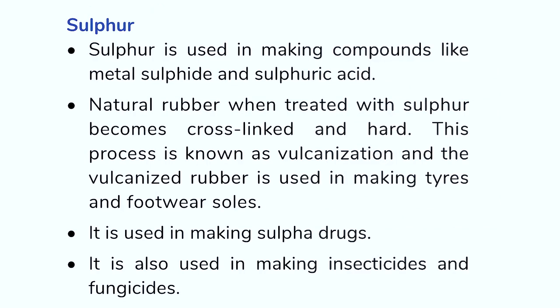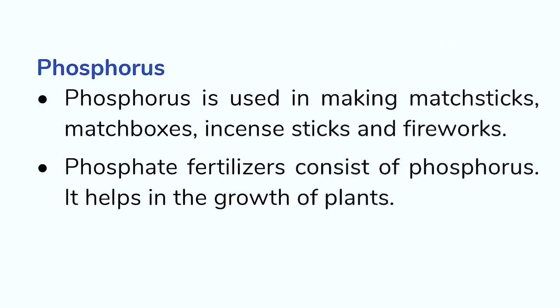Sulfur is used in making compounds like metal sulfide and sulfuric acid. Natural rubber, when treated with sulfur, becomes cross-linked and hard. This process is known as vulcanization. And the vulcanized rubber is used in making tires and footwear soles. It is used in making sulfur drugs. It is used in making insecticides and fungicides.